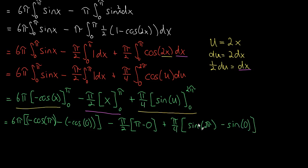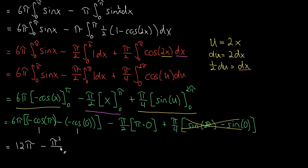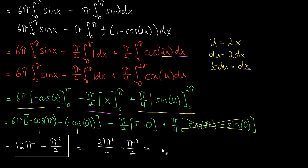Simplifying: sine 2pi is 0 and sine 0 is 0, so the last term is 0. The middle term gives minus pi squared over 2. Cosine of pi is minus 1, so minus minus 1 is positive 1; cosine of 0 is 1, so minus 1 again gives 2 total. That means 6pi times 2 is 12pi. Combining: 12pi minus pi squared over 2. Converting 12pi to have denominator 2 gives 24pi squared over 2 — wait, that's 24pi over 2 — minus pi squared over 2, which equals 23pi squared over 2. That is our final answer.